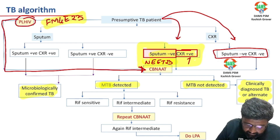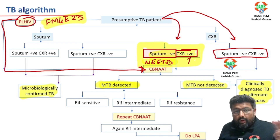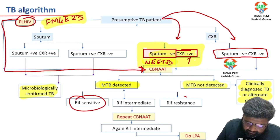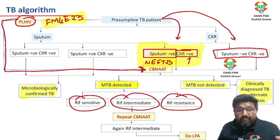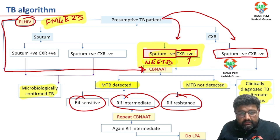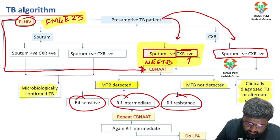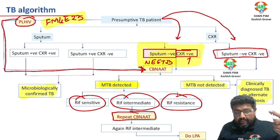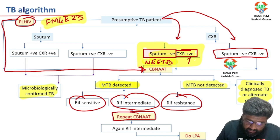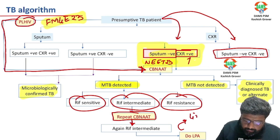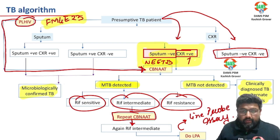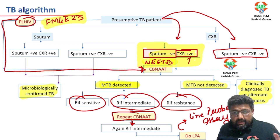If TB is detected, check whether it is rifampicin sensitive or rifampicin resistant. If the result is intermediate — meaning we cannot determine whether it is rifampicin sensitive or resistant — you repeat the CBNAAT. If after repeating it is again intermediate, then you proceed to Line Probe Assay. This is very important.